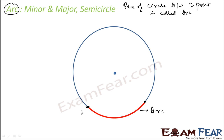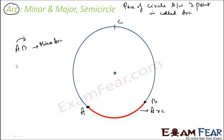Let's name the two points A and B. You can actually have one big arc and one small arc between them. To denote the arc, we put a curve arrow over AB — this is how we denote the minor arc. To denote the major arc, we take any point C somewhere on the circle and say arc ACB.